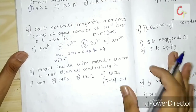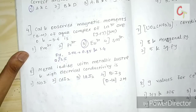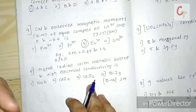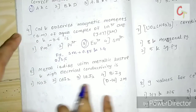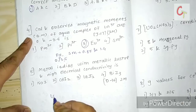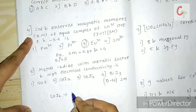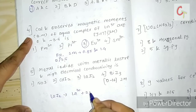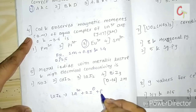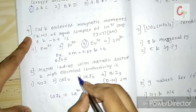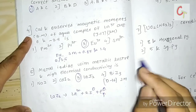Next question asks which metal iodide forms a metallic cluster with high electrical conductivity. As mentioned in the previous question regarding EuI₂, lanthanides can show metallic clusters. Here, lanthanide I₂ has the lanthanide in +3 oxidation state with 2 iodines and one extra electron providing electrical conductivity. So the answer is option 2 (third option).